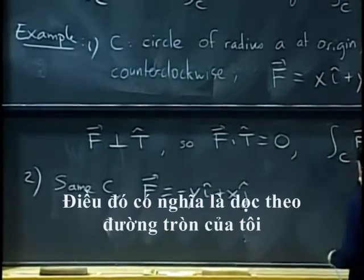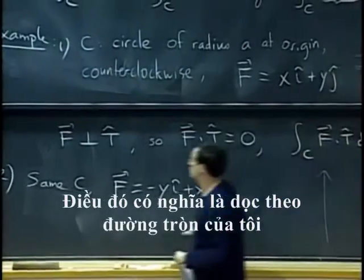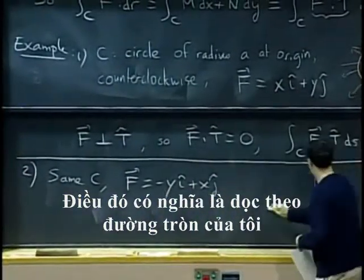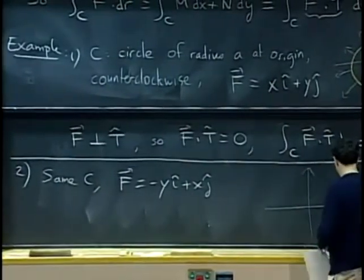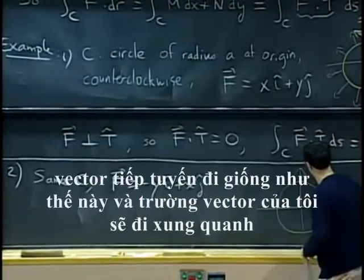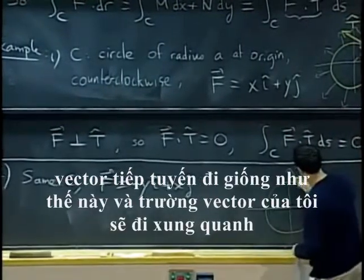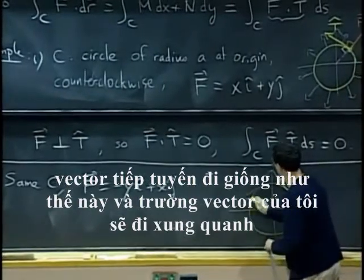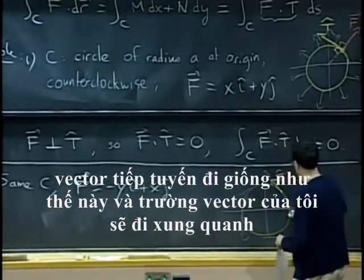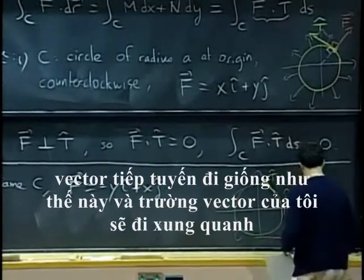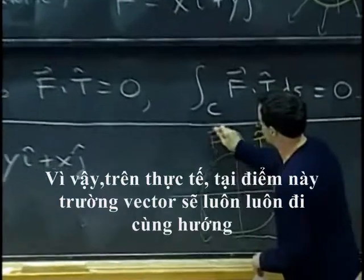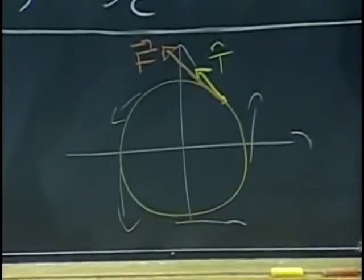So that means along my circle the tangent vector goes like this. And my vector field is also going around. So in fact, at this point, the vector field will also be going in the same direction.